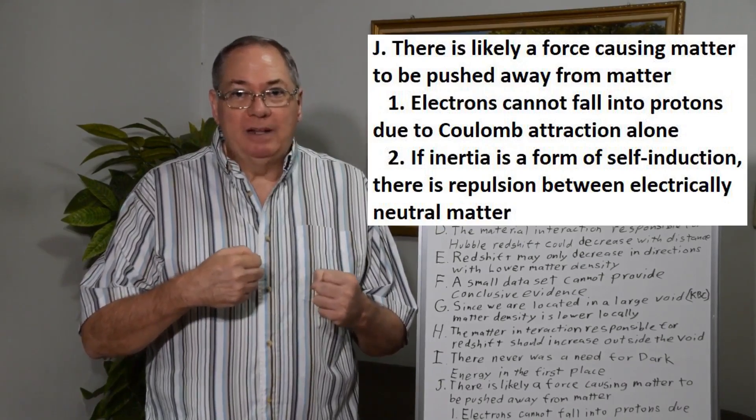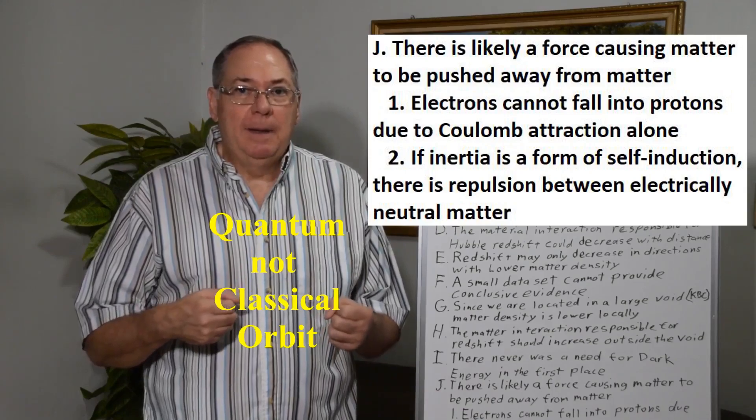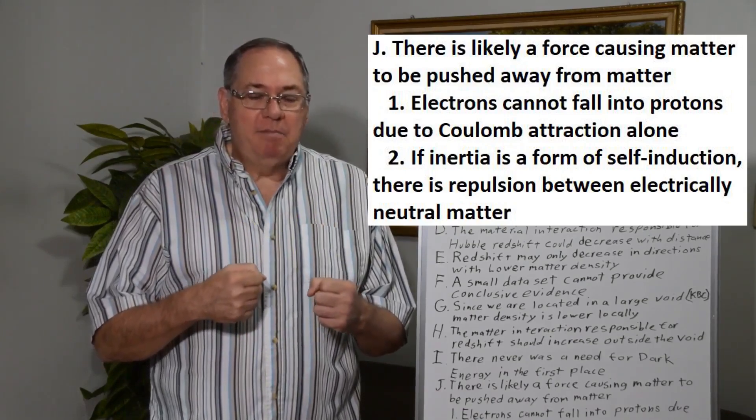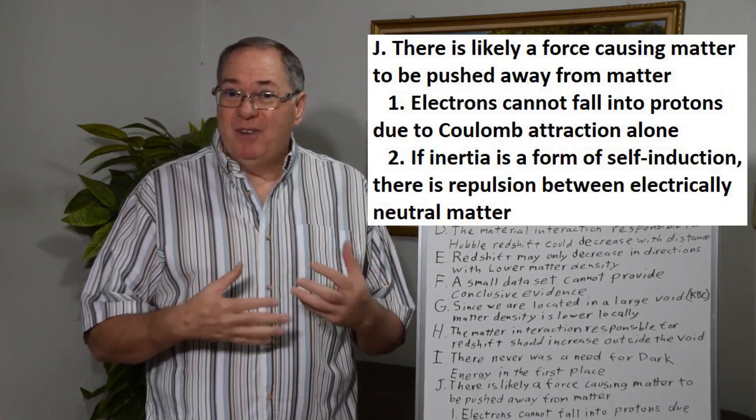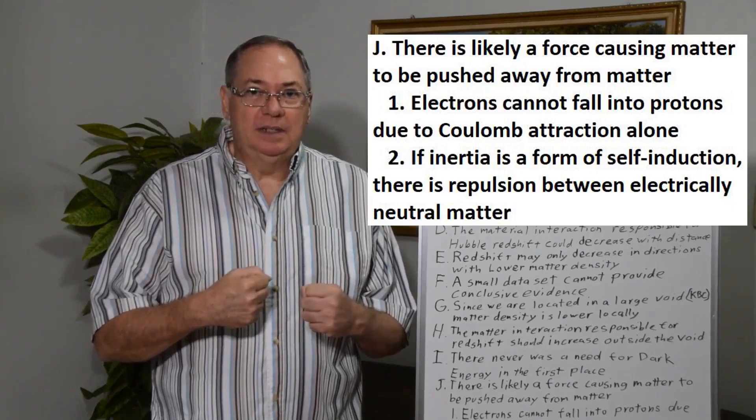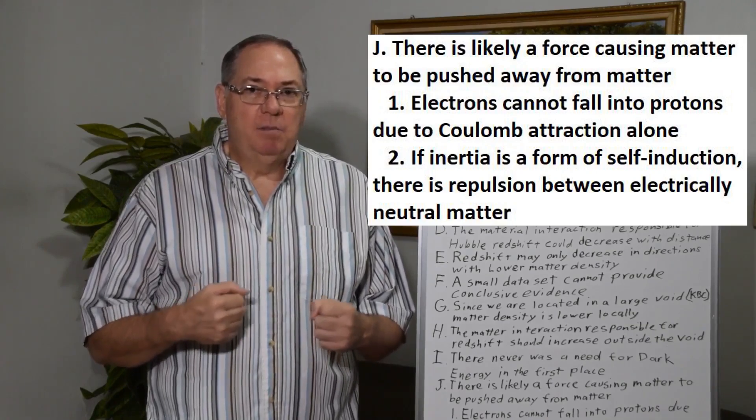And at that point, you end up with the electron orbiting the proton. But we don't know how that happens. But it implies, in a real classical mechanical sense, that there's a force opposing Coulomb electrostatic attraction at some point.